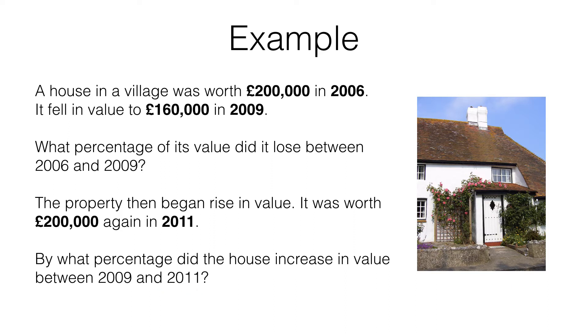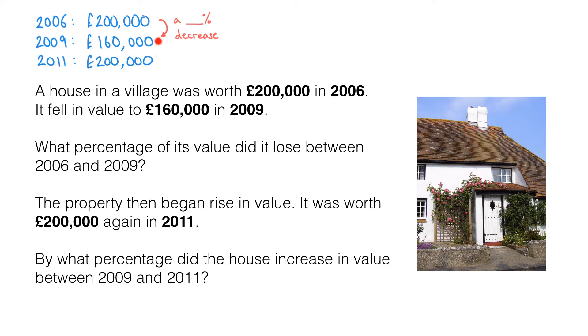Now there are a lot of words there so let's try and simplify this situation down. What we know is the following. In 2006 the house was worth £200,000. In 2009 it had dropped in value to £160,000, and then by 2011 it had got back to £200,000. What we have to work out is what percentage of its value it lost between 2006 and 2009 and what percentage of its value it gained between 2009 and 2011.